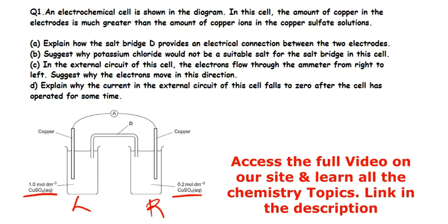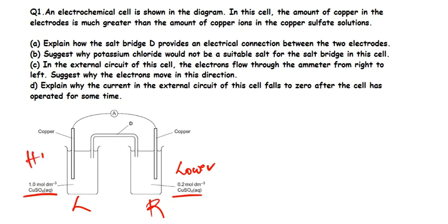Why is it that electrons flow from a side where we have lower concentration to a side where we've got higher concentration? There are a lot of ways of thinking about this. Think of OIL and RIG: oxidation is loss of electrons.